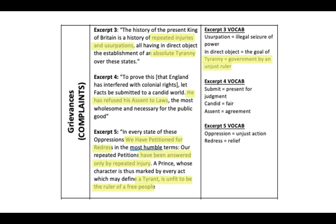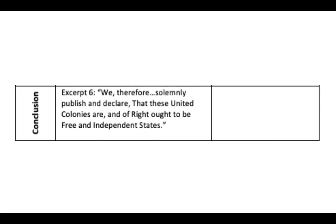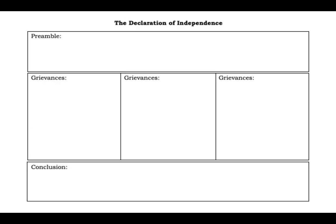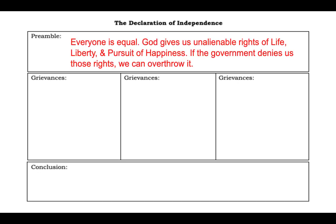The colonists asked for relief — most notably through the Olive Branch Petition — and the king continued to harm them. They concluded: 'A prince whose character is thus marked by every act which may define a tyrant is unfit to be ruler of a free people.' They had asked for continuous peace and the king abused his powers, so it was time to alter and abolish his government and start over with their own freedom and independence.